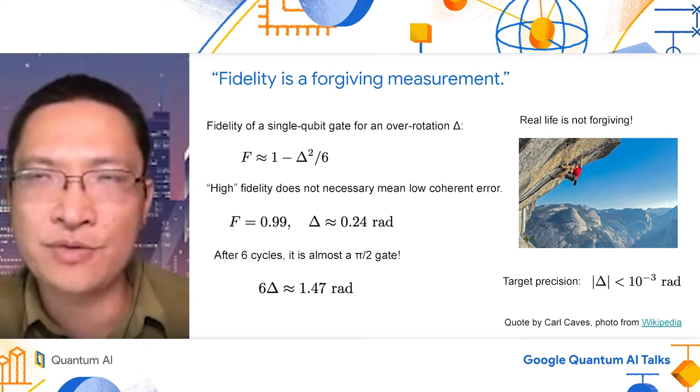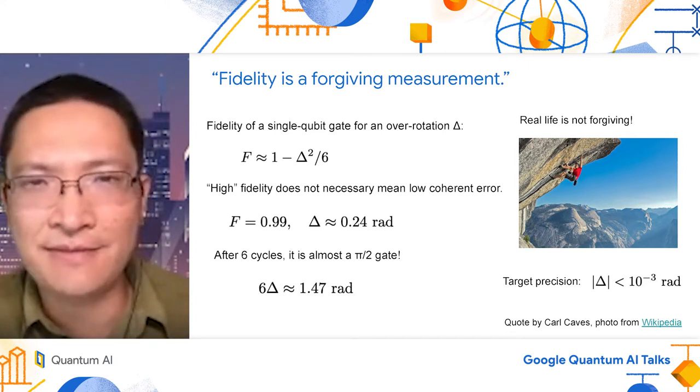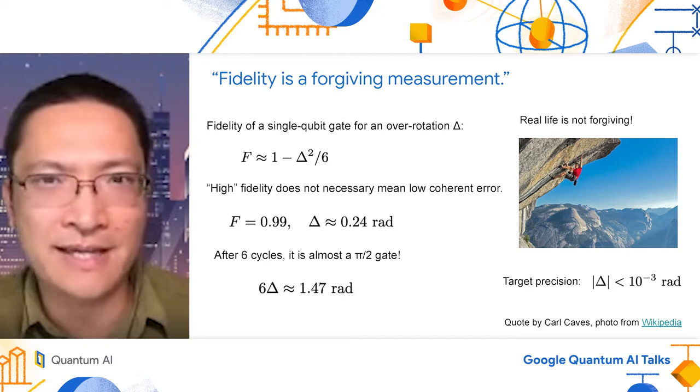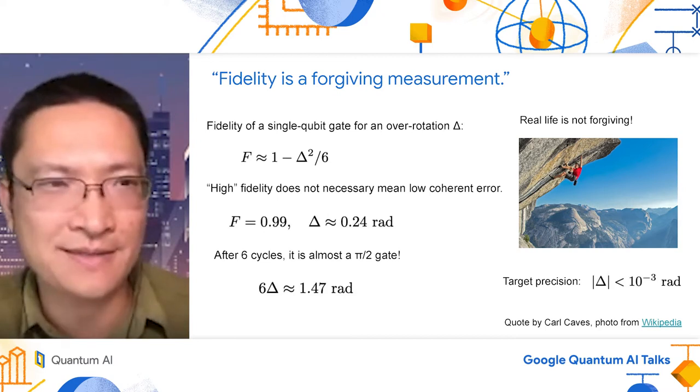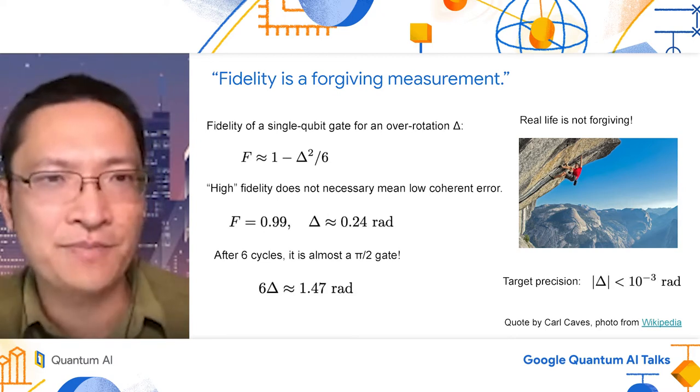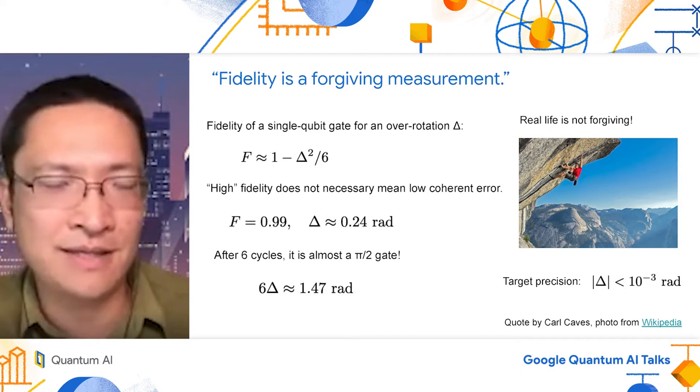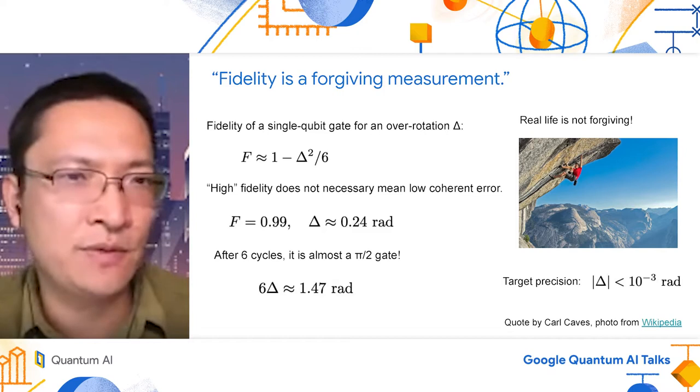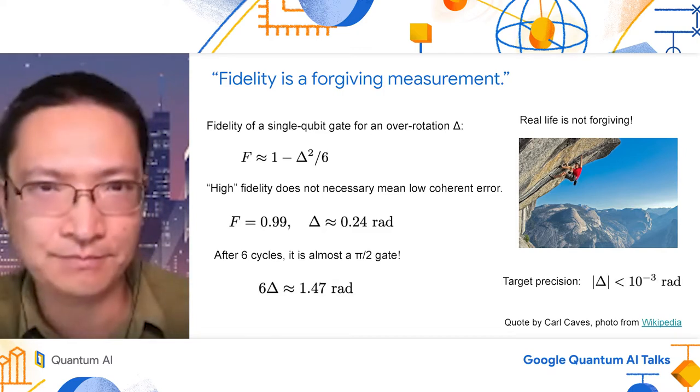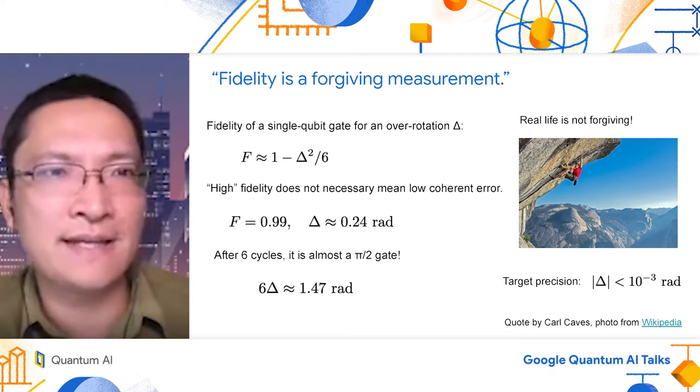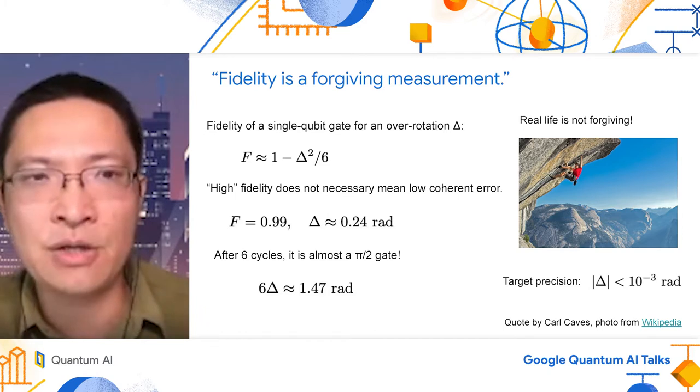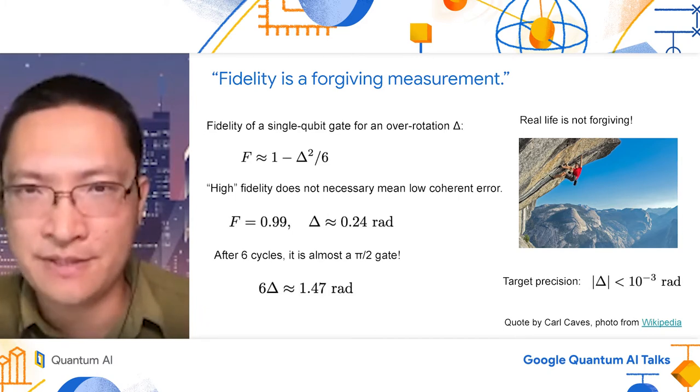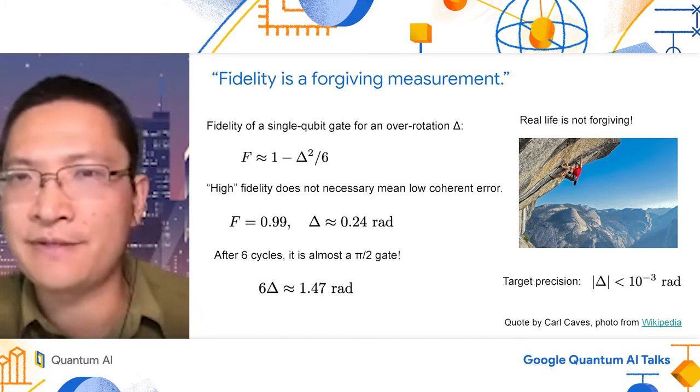After 6 cycles, one was naively thinking that we got a gate of 94%. However, in reality, we got a gate that is almost a pi over 2 gate. That is certainly not 94% fidelity. Therefore, fidelity is a very bad measure for systematic errors.